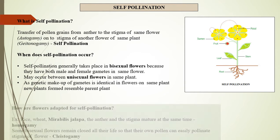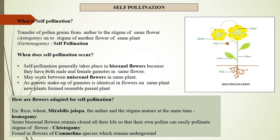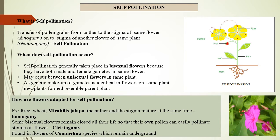How are flowers adapted for self-pollination? In rice, wheat, and Mirabilis jalapa, the anther and stigma mature at the same time — this is known as homogamy. Some bisexual flowers remain closed all their life so that their own pollen can easily pollinate the stigma — this is known as cleistogamy. Cleistogamy is found in flowers of Commelina species which remain underground.